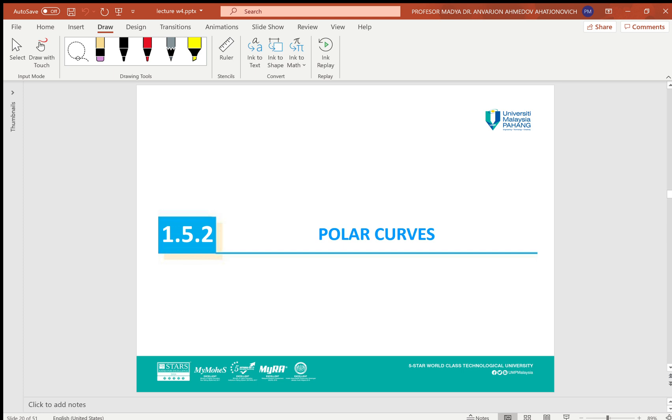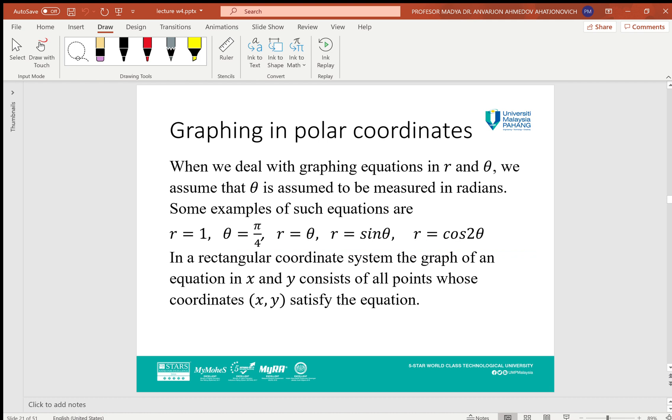Graphing in polar coordinates: when we deal with graphing equations in r and θ, we assume that θ is measured in radians. Some examples of such equations are r = 1, θ = π/4, r = θ, r = sinθ, r = cos2θ.